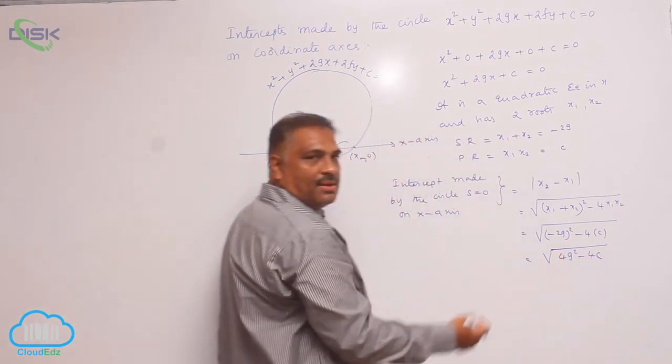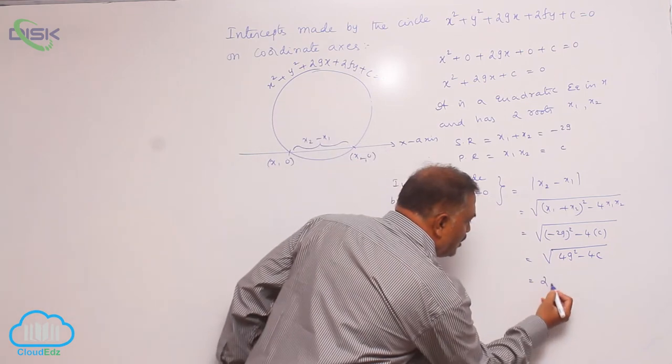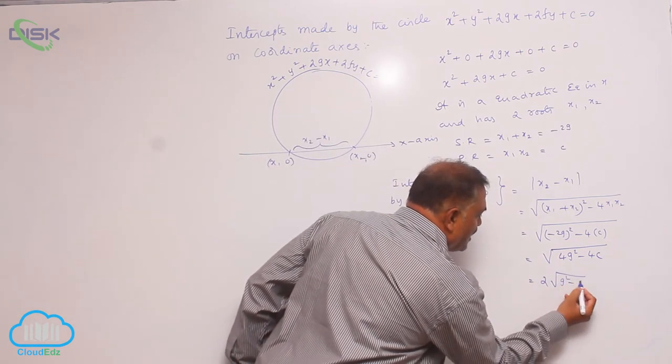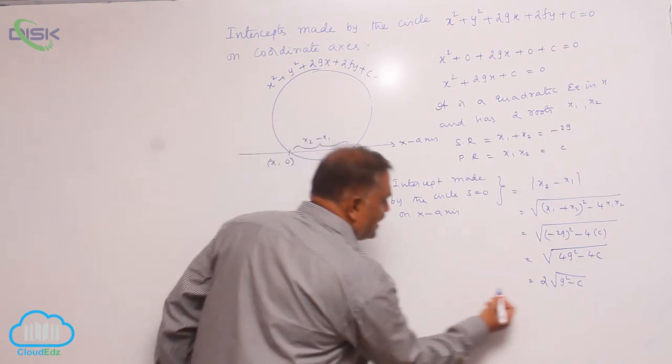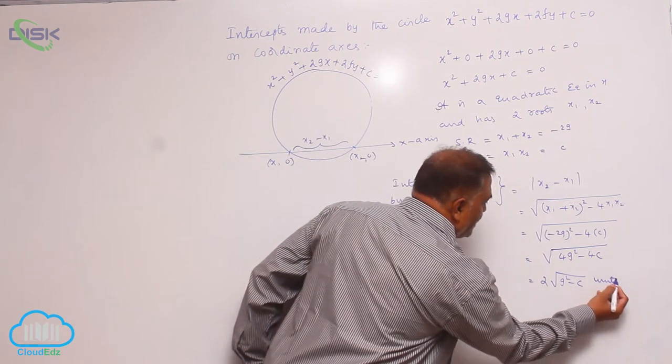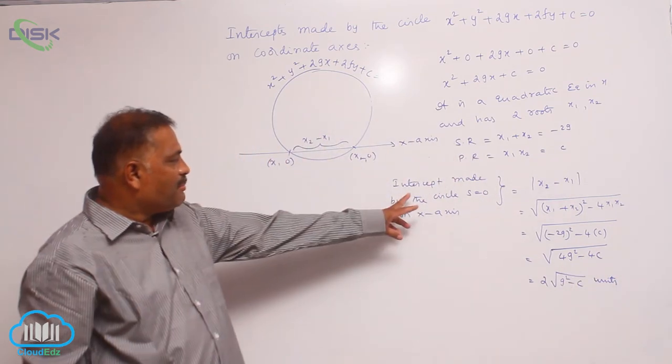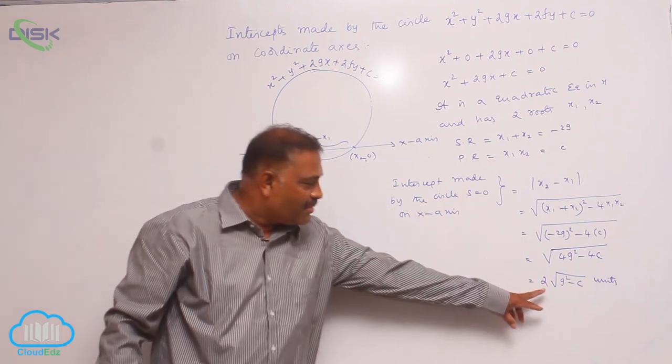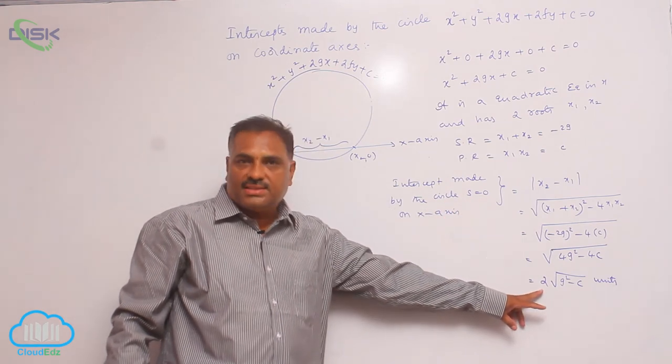Taking 4 as a common factor, we get 2√(g² - c) units. Therefore, the intercept made by the circle on the x-axis is given by 2√(g² - c).